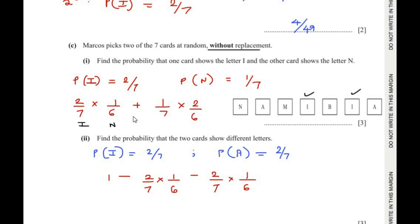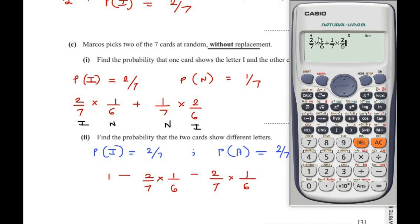The second possibility is picking N first, then I. P(N first) = 1/7. After removing N, 6 cards remain, so P(I second) = 2/6. Adding both possibilities: (2/7 × 1/6) + (1/7 × 2/6) = 2/42 + 2/42 = 4/42 = 2/21. So the probability is 2/21.